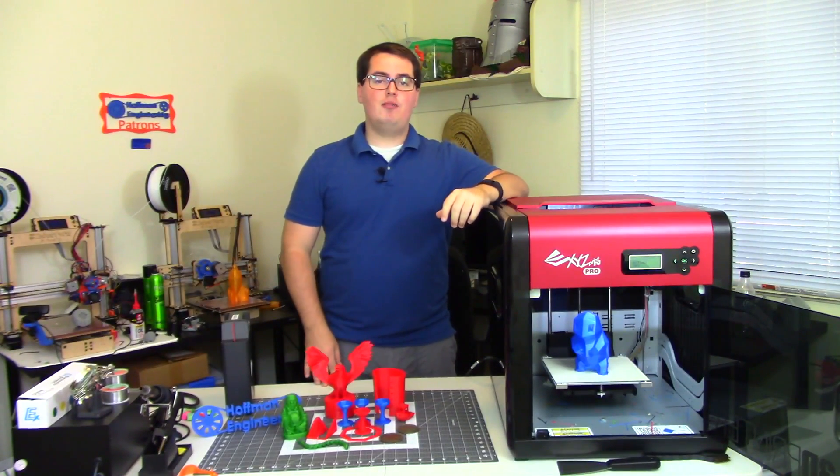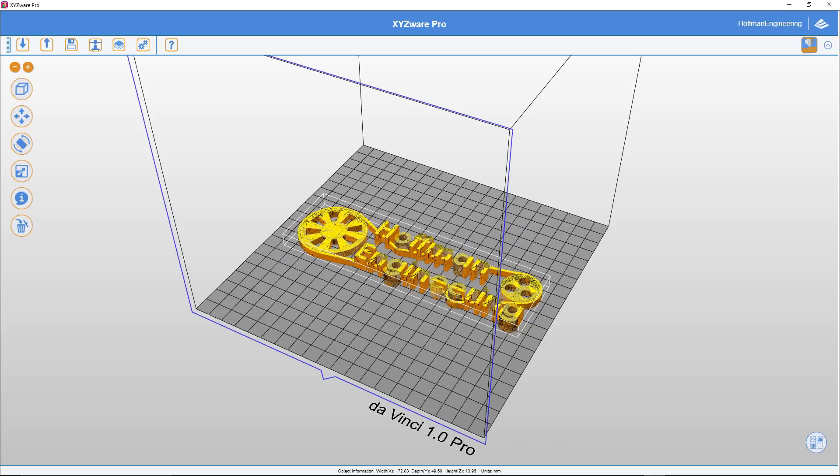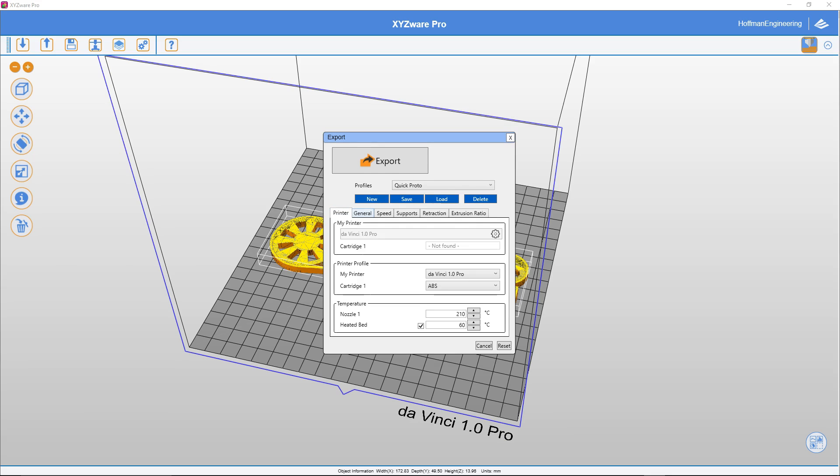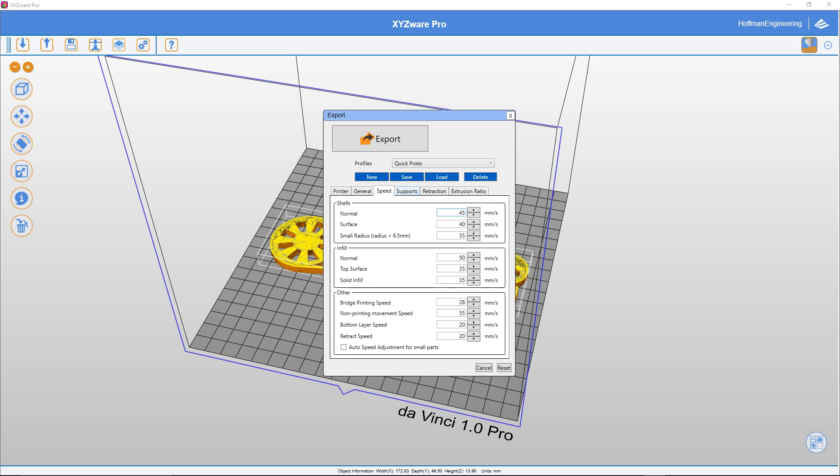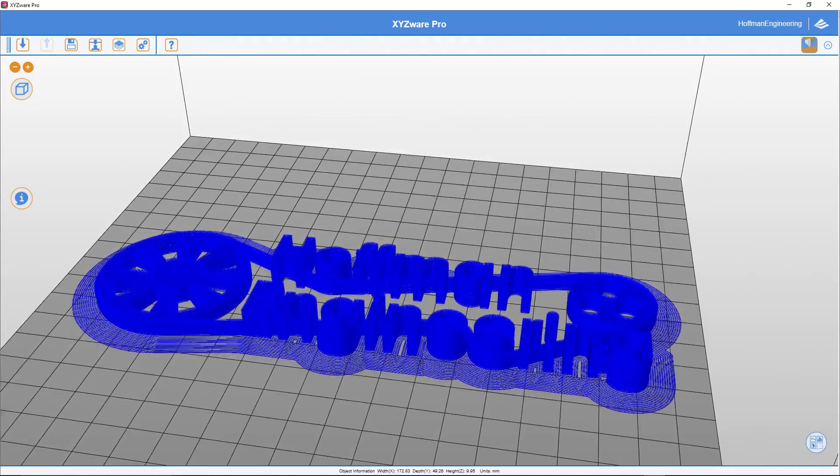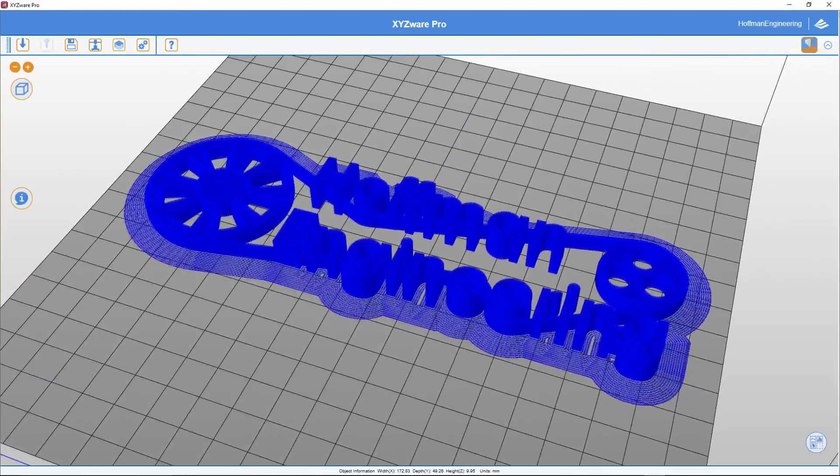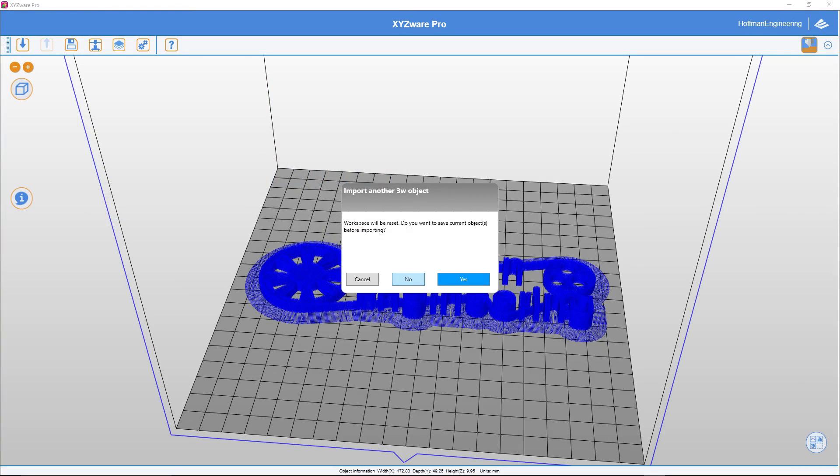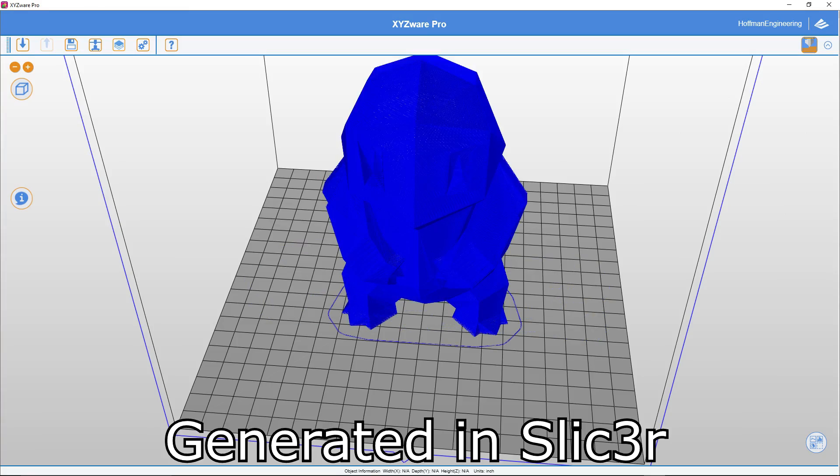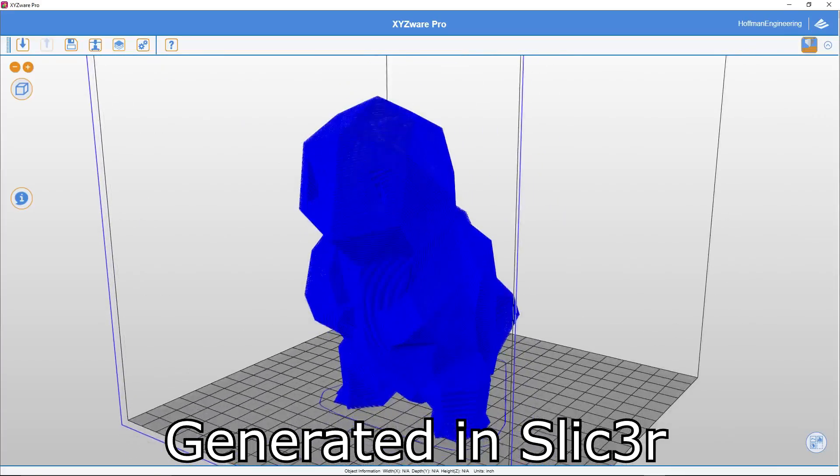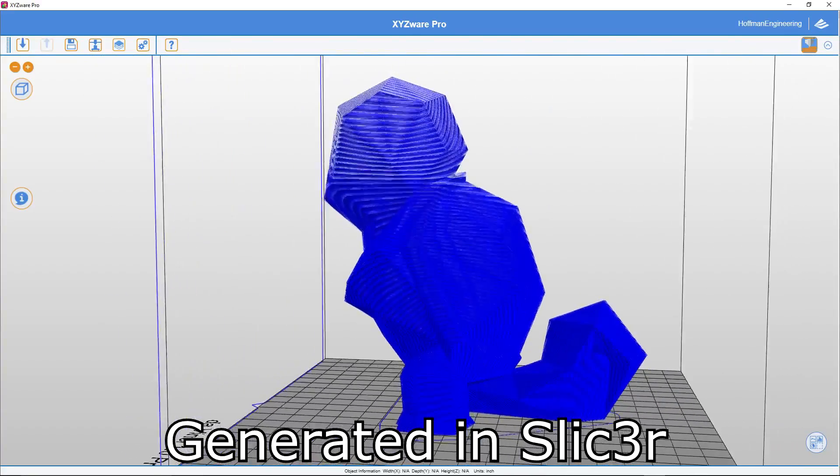The printer is controlled through their software, XYZware Pro. It's a slicer which is also used to send files to the printer, either through USB or Wi-Fi. The slicing portion is leaps and bounds better than the version for the junior. With the Pro version, you have full control over all of the settings you'd expect: print speeds, layer heights, rafts, supports, and brims. And if you don't like the way that XYZware slices your file, you can even import G-code generated by other programs and simply send it to the printer. This gives you much more flexibility and allows you to use your favorite slicer with this 3D printer, which is a great feature.